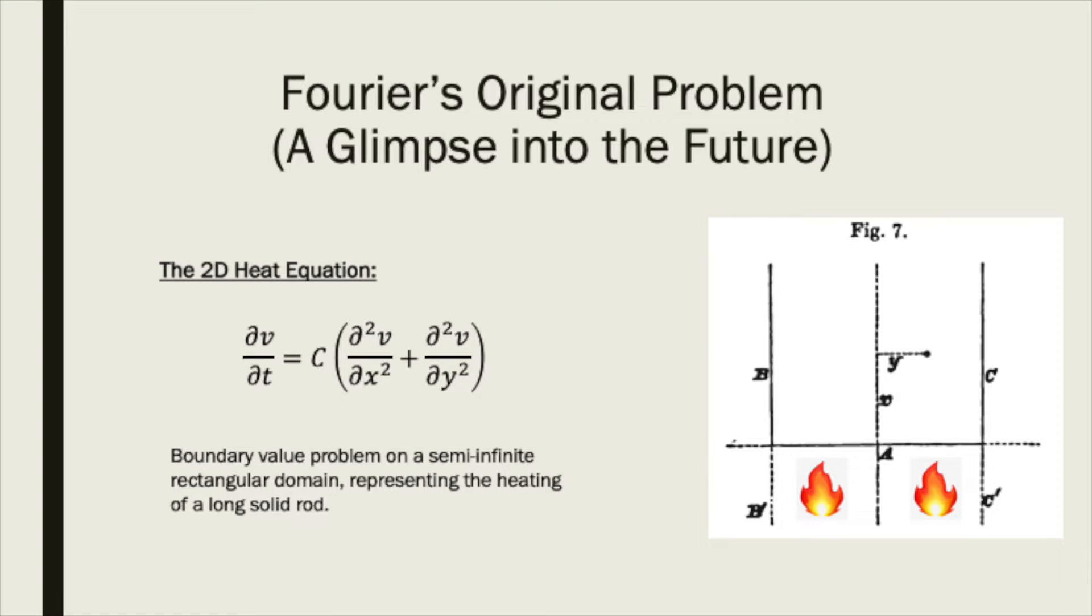This problem is difficult to solve if the distribution of heat on the boundary is given as some random function. However, it has nearly trivial solutions for the sine and cosine terms in the Fourier series. Due to the linearity of the heat equation, solutions for these terms can be added together to approximate the solution for arbitrary heat distributions using the Fourier series. We will solve this problem later in the course once PDEs have been formally introduced.